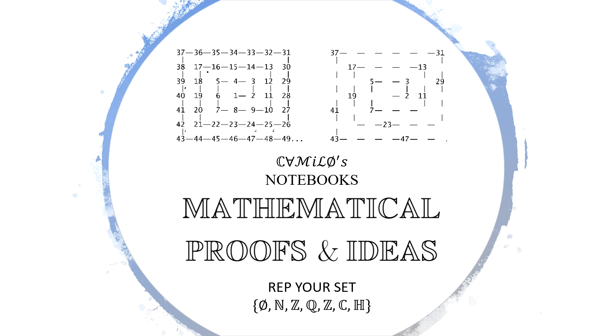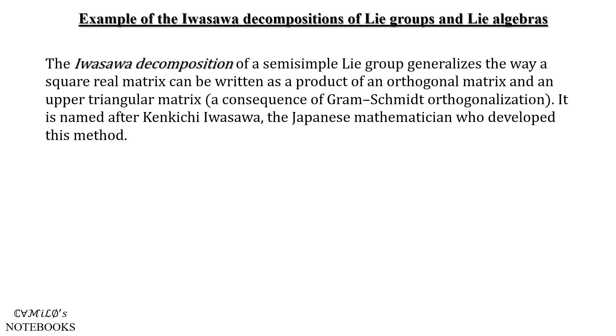Today we'll be looking at Lie groups, so warning, there will be a bit of advanced math involved here. So today we're going to be looking at the Iwasawa decomposition of SL₂(ℝ). The Iwasawa decomposition of a semi-simple Lie group basically generalizes the way square matrices can be written as a product of an orthogonal matrix and an upper triangular matrix, which is a consequence of the Gram-Schmidt orthogonalization process.